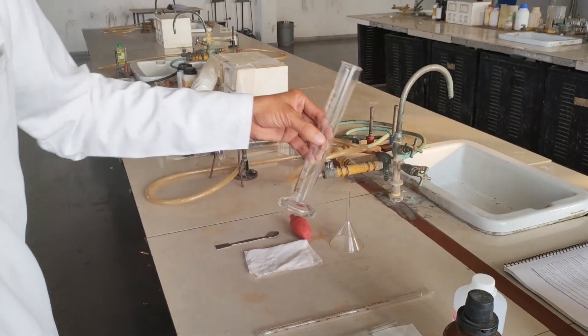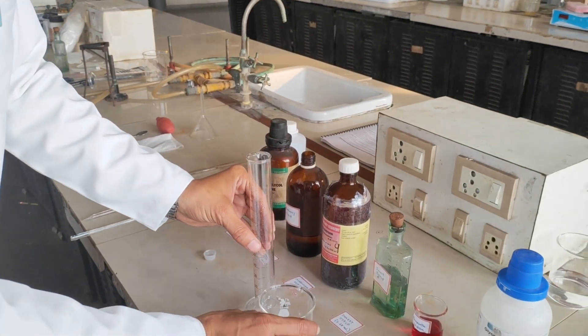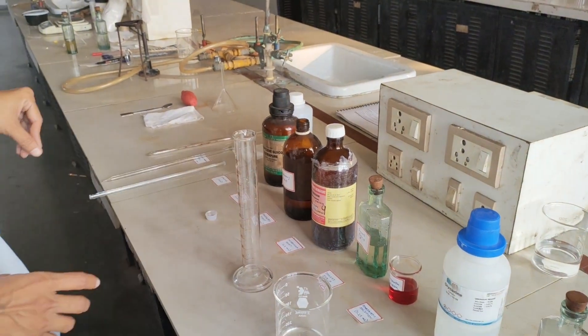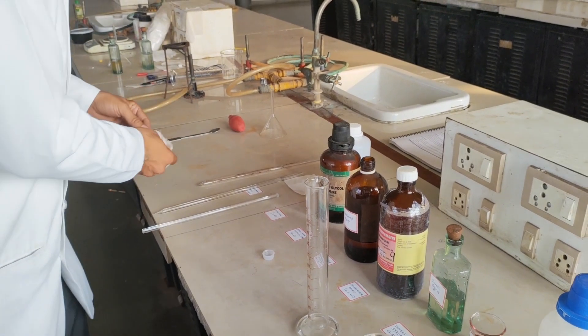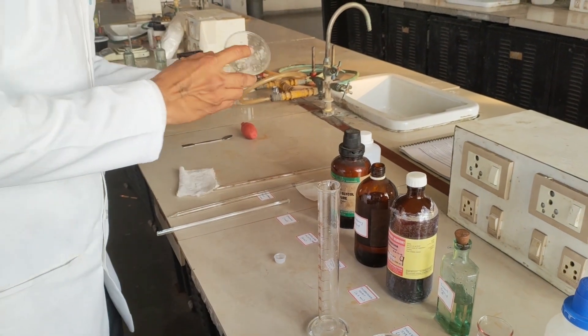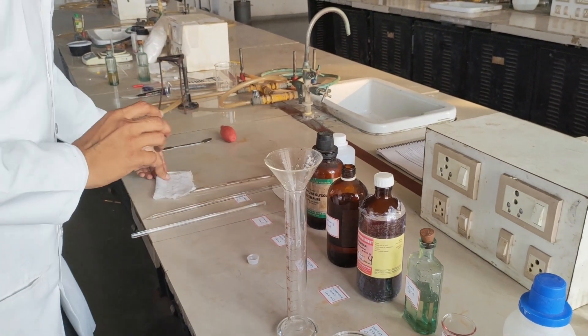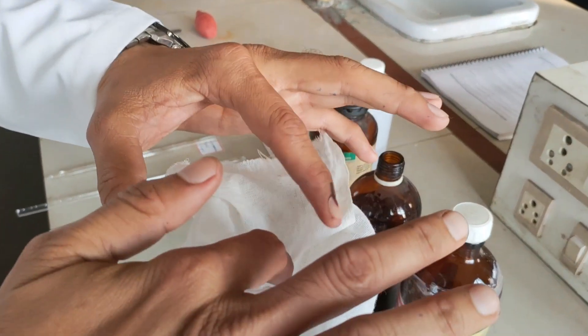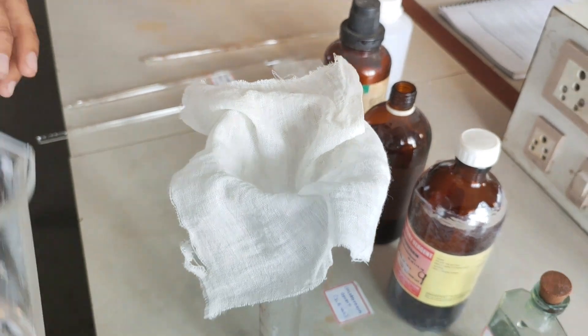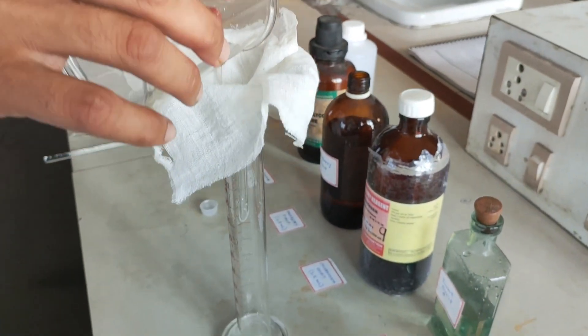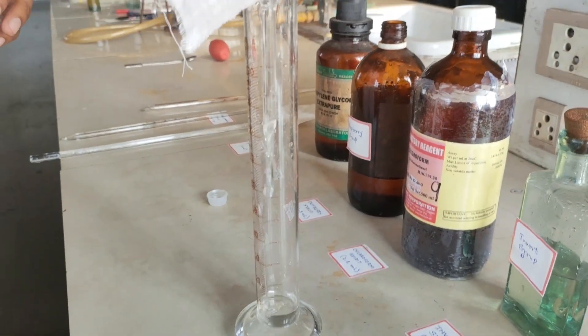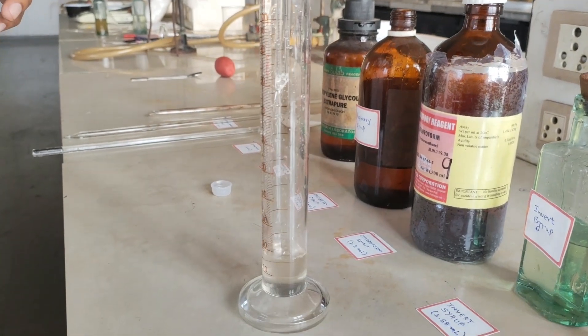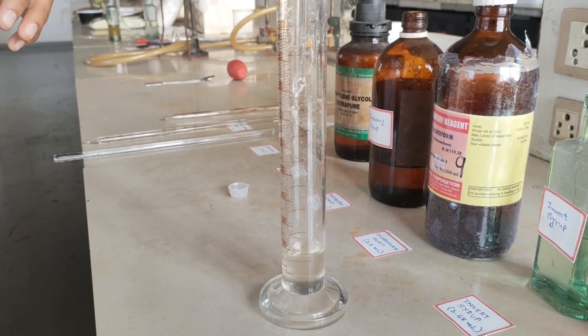Now take one measuring cylinder. We are going to filter it out for insoluble impurities using the muslin cloth.